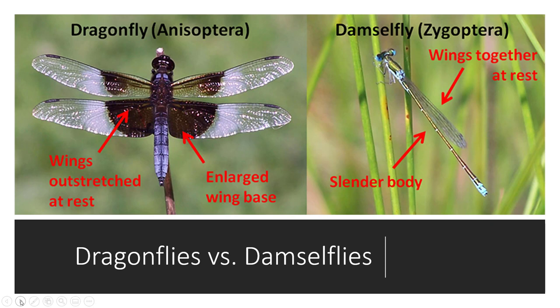Damselflies do not have the ability to fold their wings totally flat against their back like a cockroach or beetles or other insects do, which tells us they are still pretty primitive. Other insects are younger than them in the grand scheme of things. But damselflies are considered younger than dragonflies because they have that adaptation to be a little bit smaller and they have the muscles to fold those wings back behind the body when they're at rest.